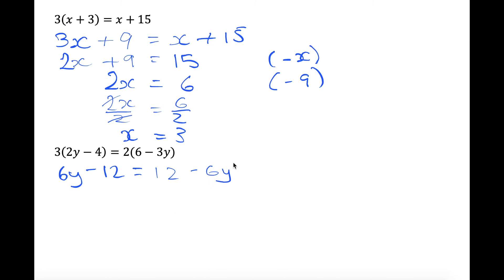Okay, so now we want to bring over the minus 6y to this side. Because remember I said that you want to collect the terms onto the side with the higher coefficient. So plus 6y is greater than minus 6y. By the way, if you do it the other way around, you're still going to get the same answer. So we're going to add 6y to both sides. So 6y plus 6y gives 12y minus 12 equals 12. So we did plus 6y.